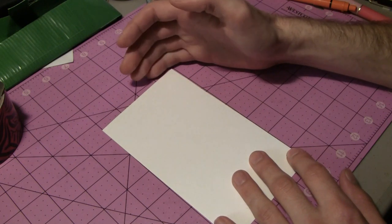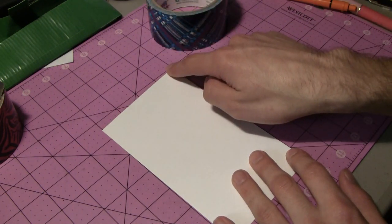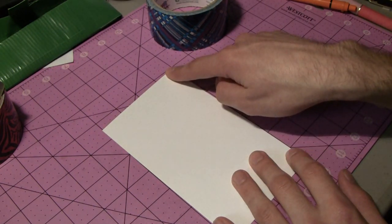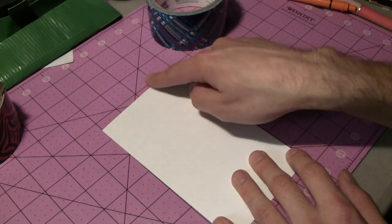My pocket is actually on an angle, so I actually had to cut that at a small angle there. If you have a pocket that's just straight across, you would obviously just cut that straight across. But mine's on an angle, so I had to do that up top.